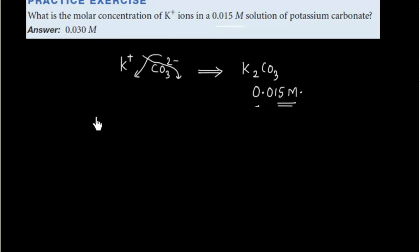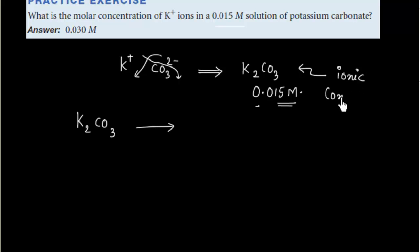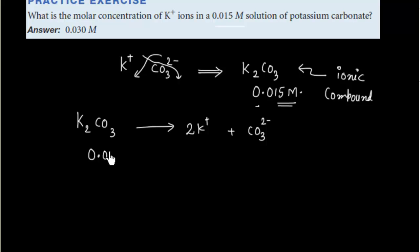The next step is to write the dissociation equation. K₂CO₃ is an ionic compound, so in solution it will dissociate to give 2K⁺ plus CO₃²⁻. The concentration of K₂CO₃ is 0.015 M. Since 1 mole of K₂CO₃ gives 2 moles of K⁺, the concentration of K⁺ will be 2 times. And 1 mole gives 1 mole of CO₃²⁻, so that remains the same concentration.